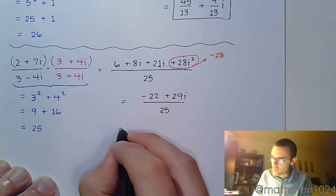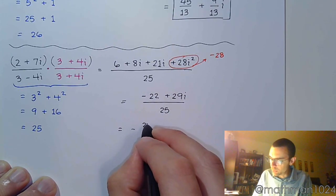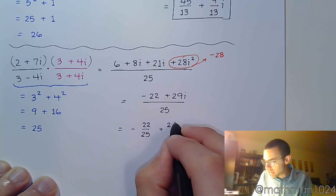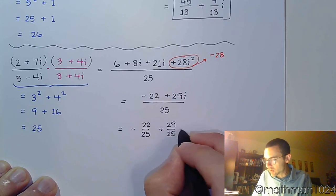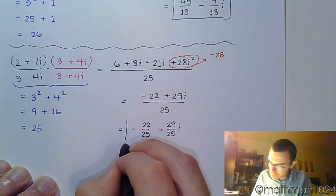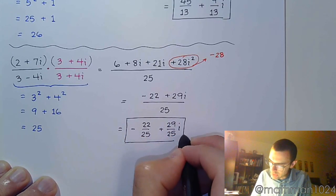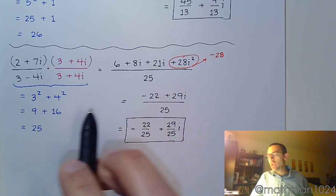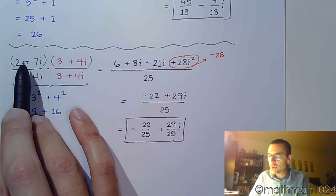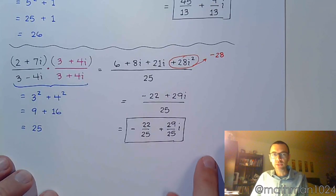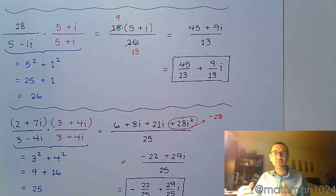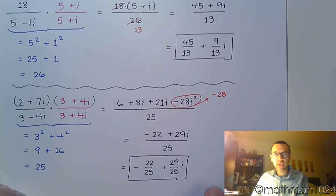And like we've done previously, separate this so we can clearly see that the real part is negative 22 over 25, and the imaginary part is 29 over 25i. It may not be the prettiest looking number in the world, but this is how we do it. Piece by piece, we take our time. We use the complex conjugate to get a nice denominator without anything imaginary. And in the numerator, we just have to multiply. In this example, we had a FOIL. In the last example, we just ended up distributing because it was a single term in the numerator.